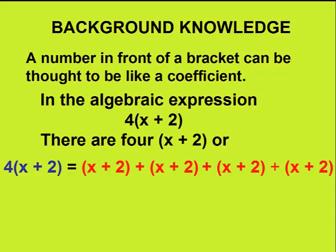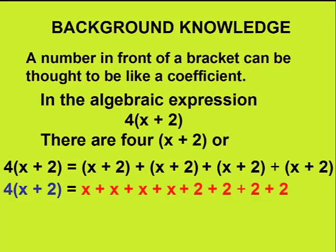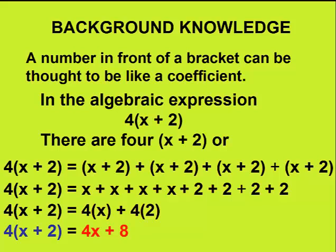If we simplify the expression on the right-hand side, we can gather together all the like terms. We know that there are 4xs and 4 2s. And 4 2s, of course, are 8.